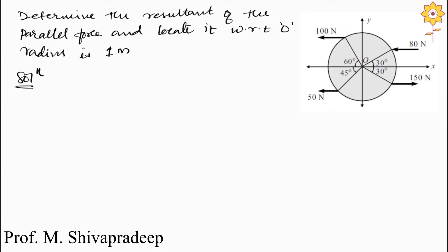In this problem, the forces are acting on a circular rod at an angle. The radius of that circle is 1 meter. We have to find out the distance of all the forces from point O.